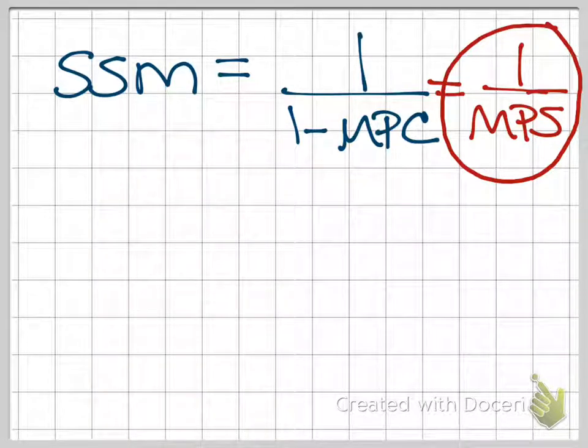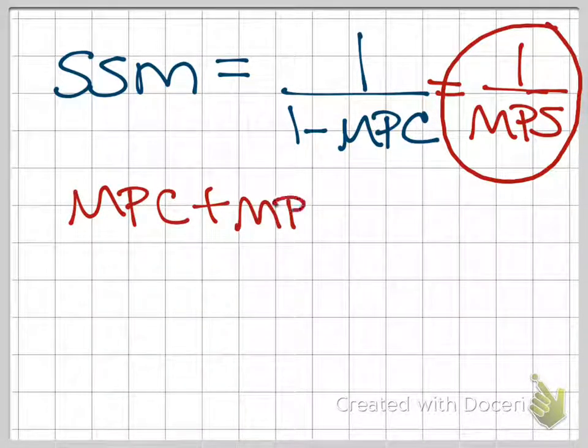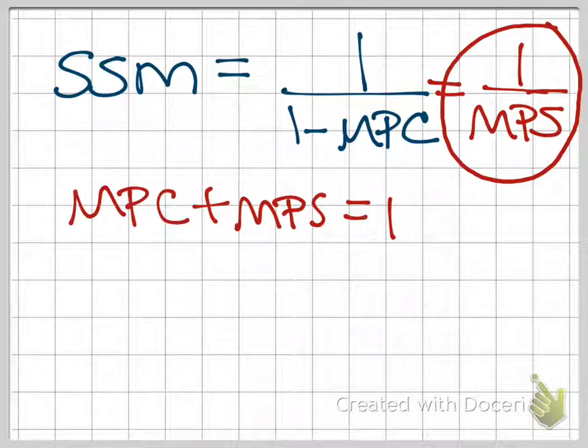And so if you have the MPC, well just plug it into that MPC plus MPS equal to 1. Plug it in there to get to the MPS and then from there you can get to your multiplier.